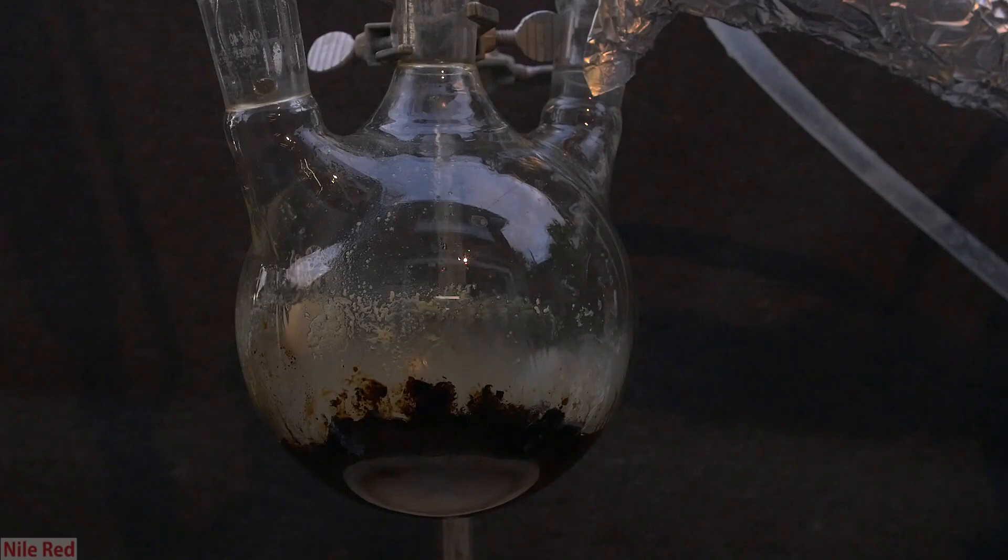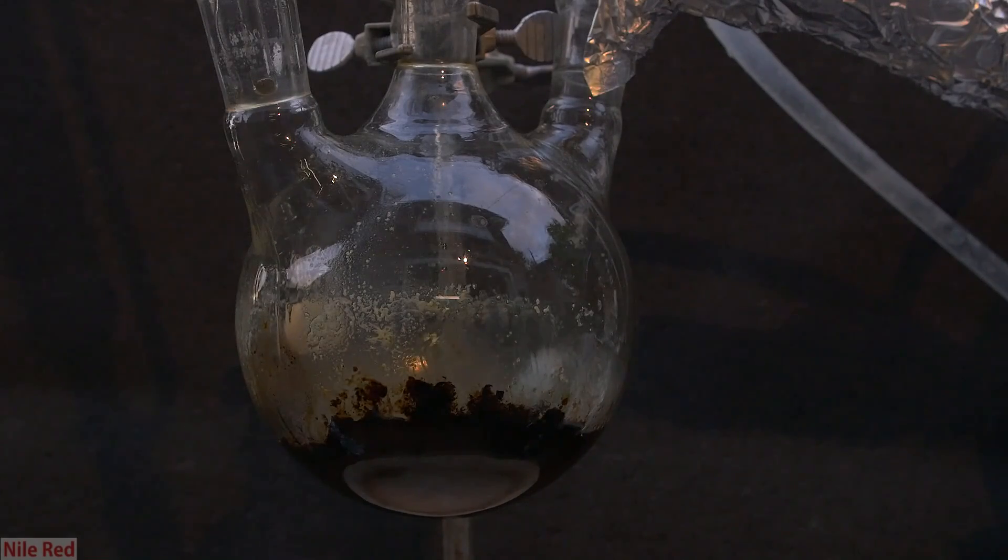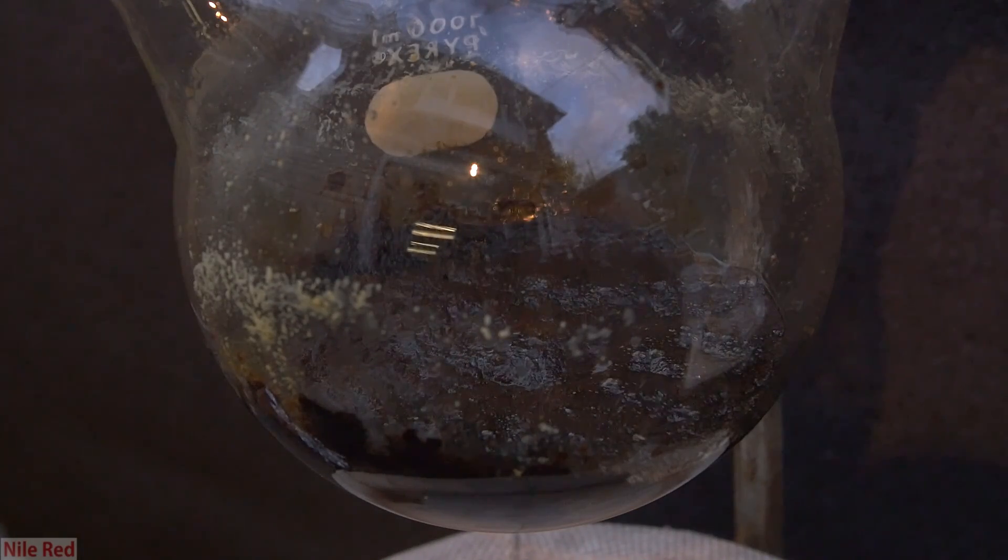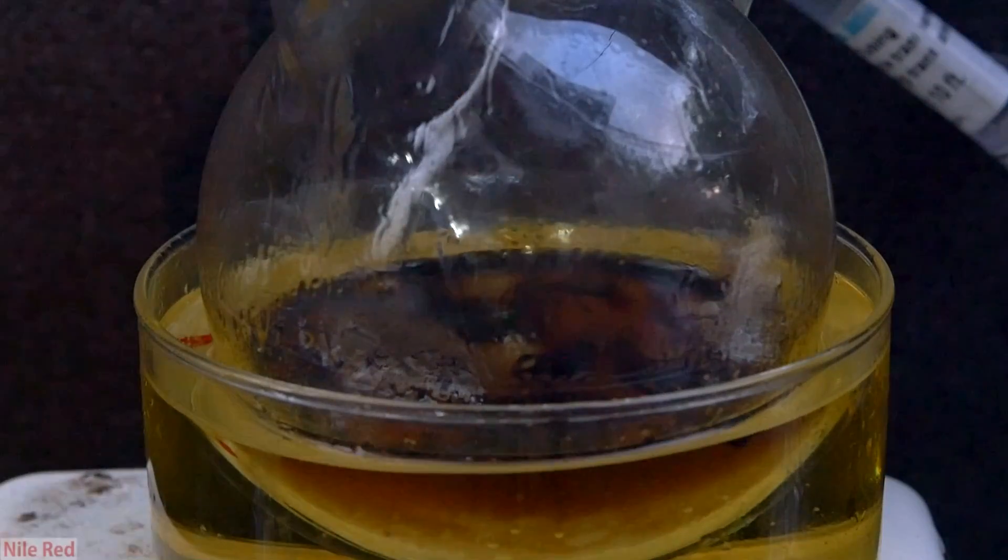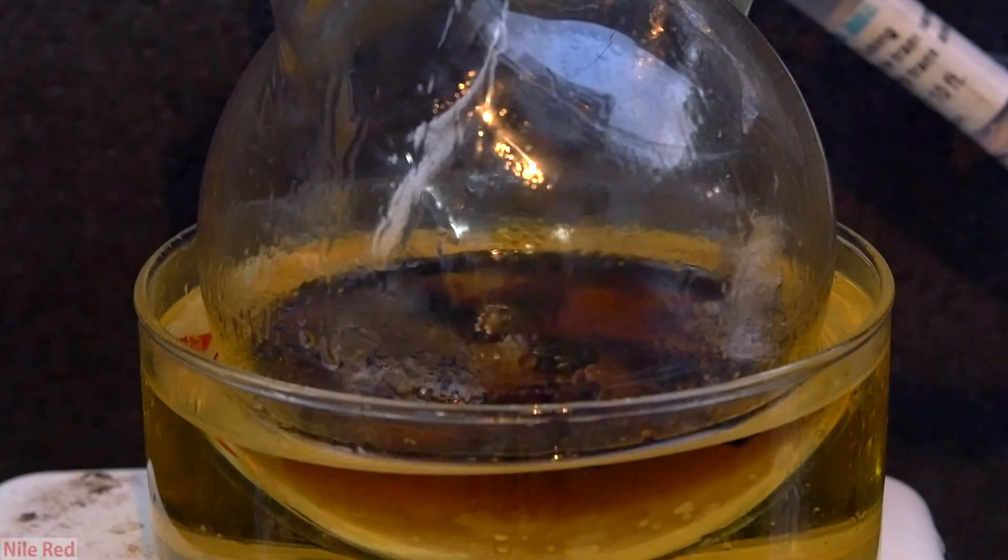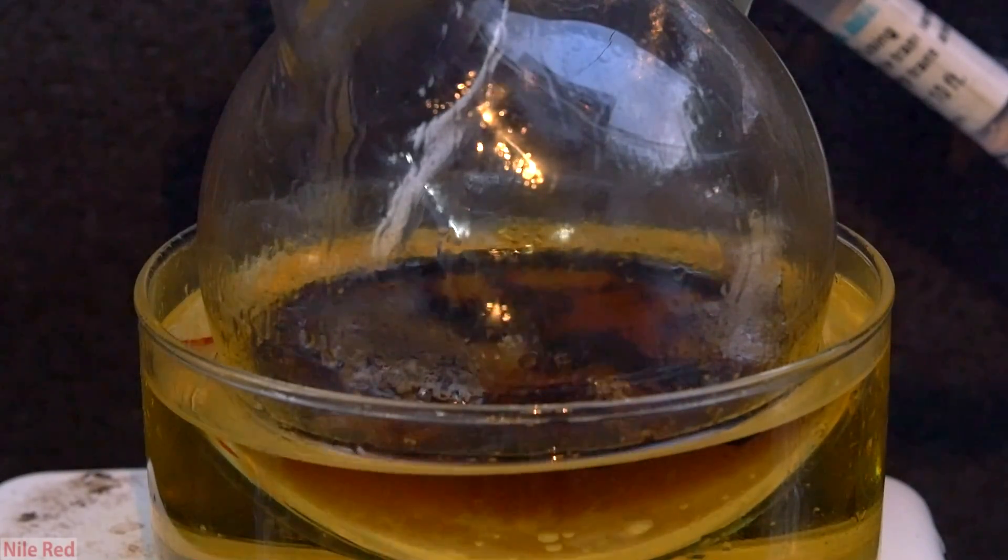Eventually we'll have added all of our glycerol, but we will reach a point where we stop collecting any acrolein in the final flask. The reaction flask is taken off heat, and when we look at it, it's kind of just a tarry mess. When we uncover the middle flask, we can see that it's collected a lot of water, and it looks pretty messy.